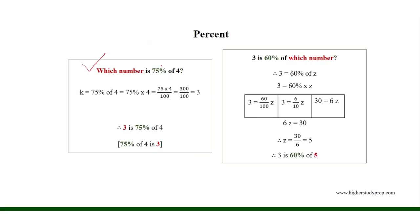Which number is 75% of 4? Let the number be K. So K equals 75% of 4, which is equal to 75% times 4, where 75% equals 75 over 100.